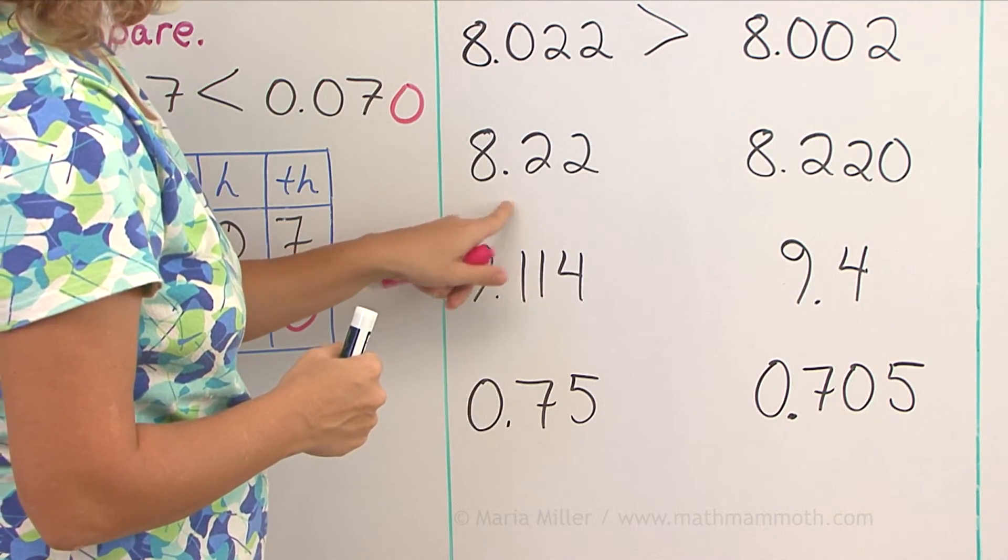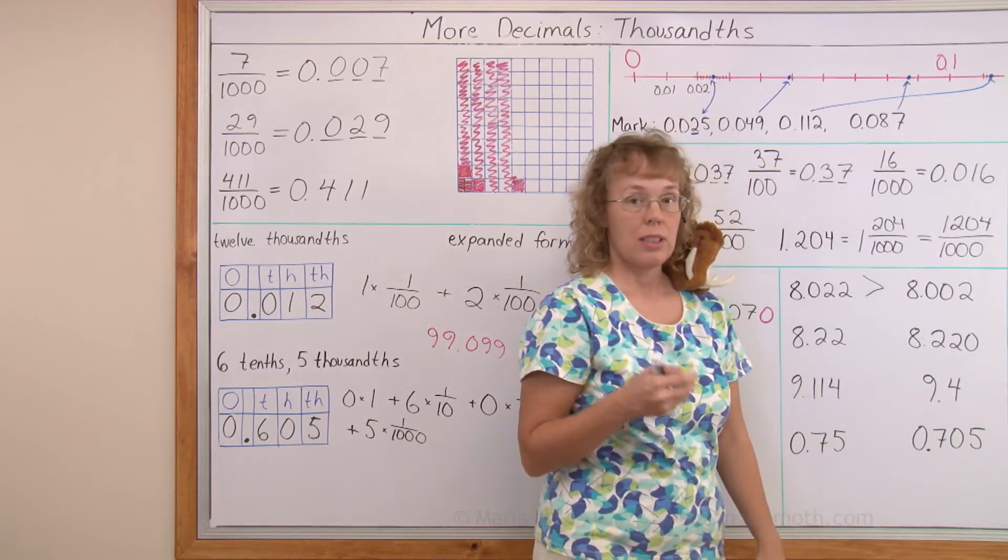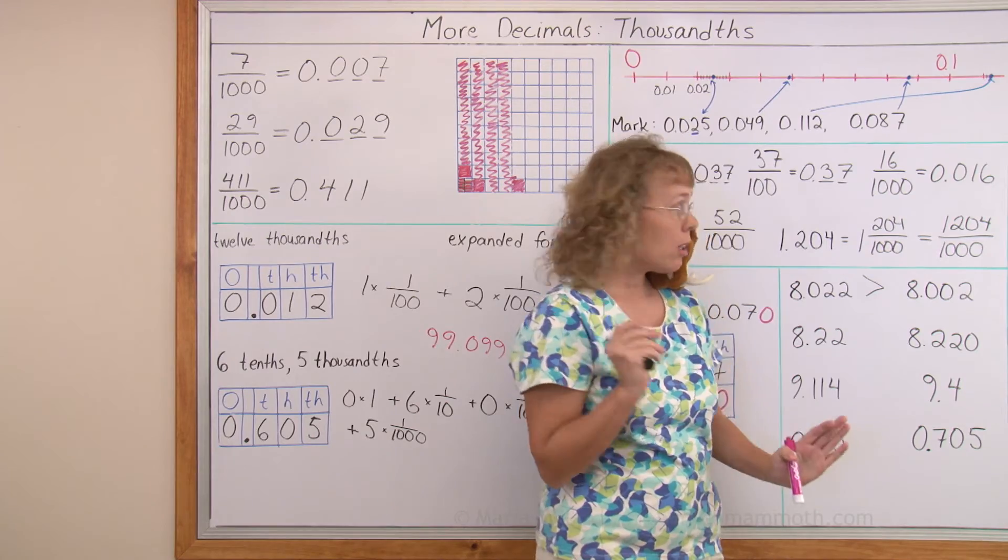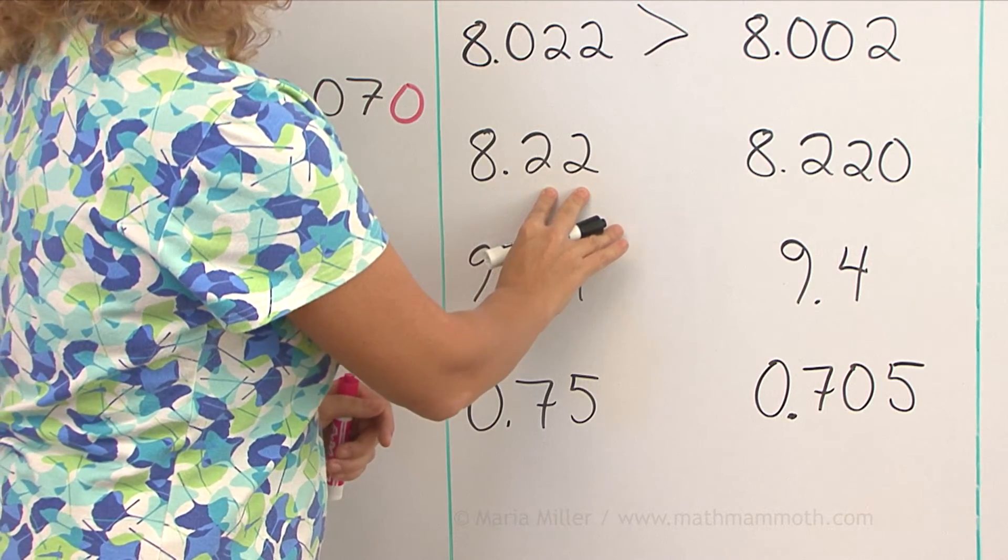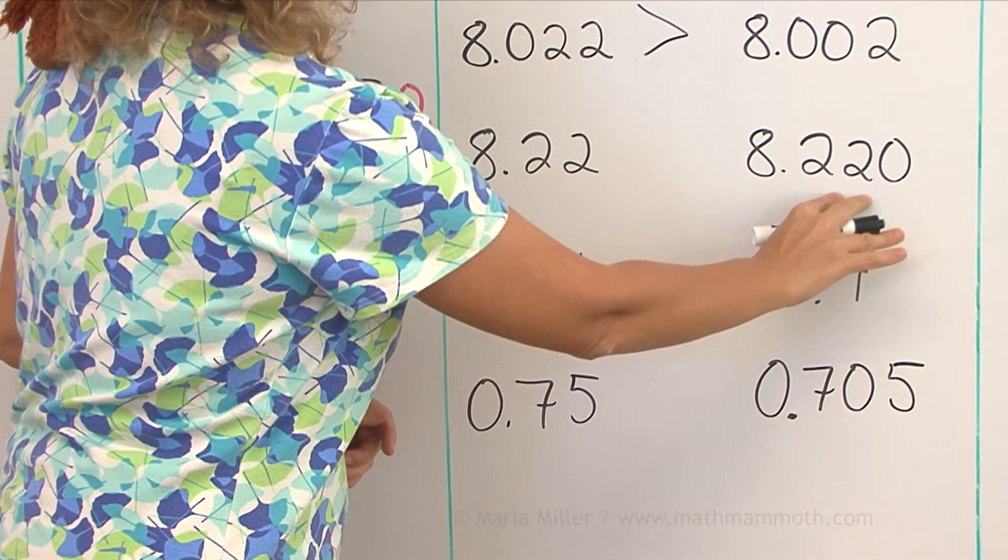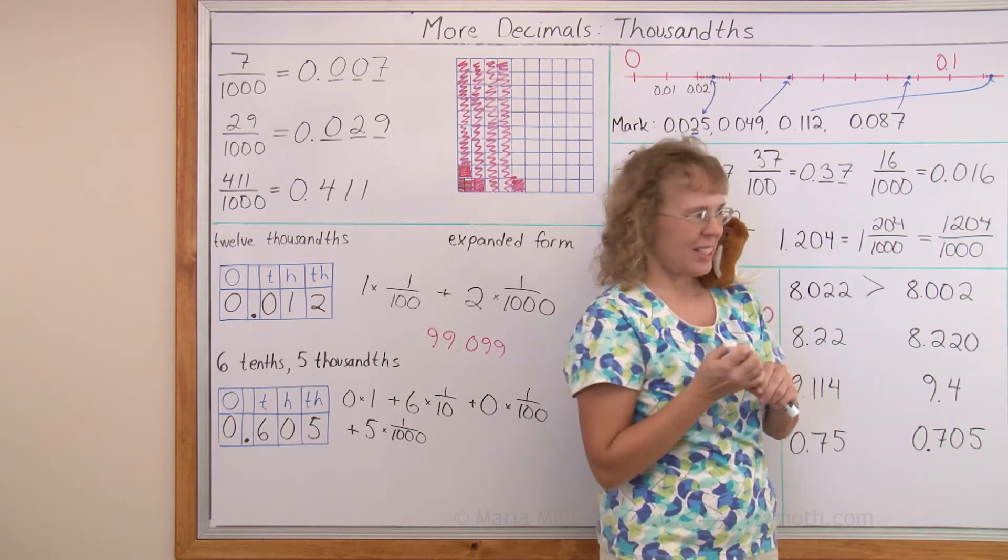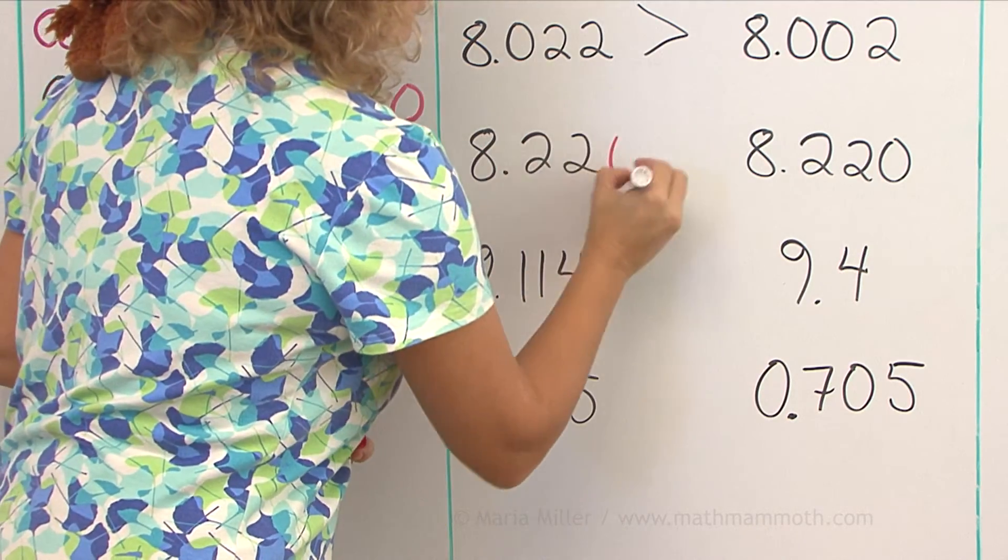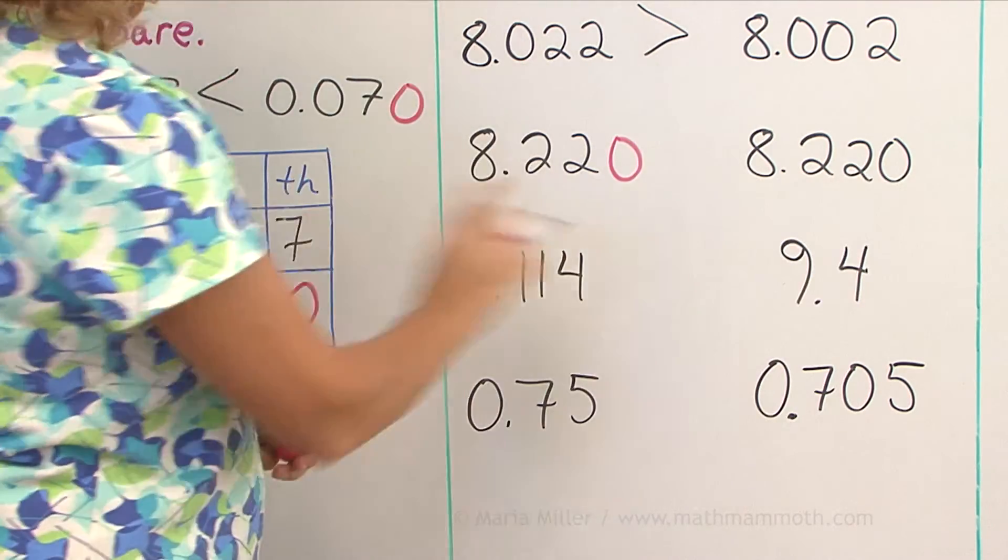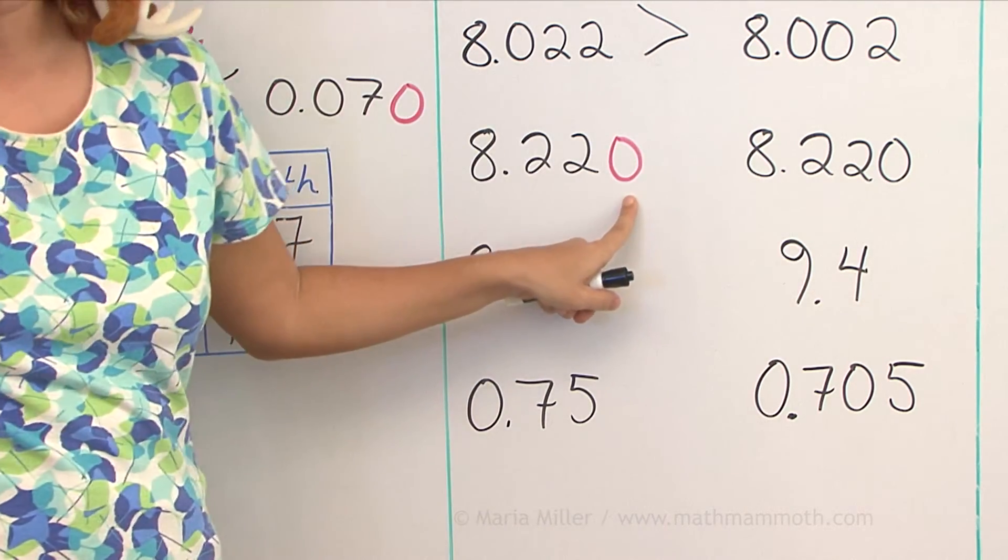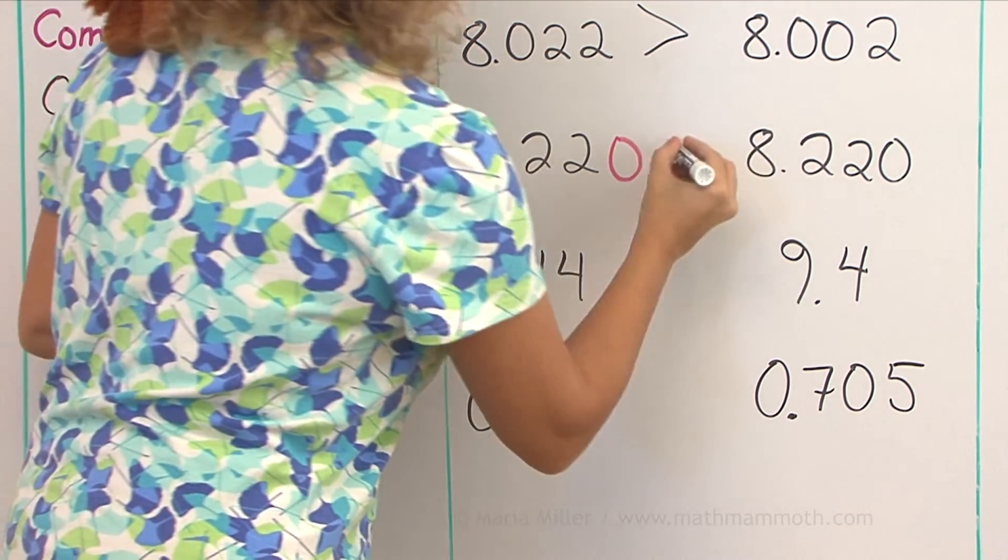Then over here, eight point two two, eight point two two zero. Can you tell now which one is more? Again, some students think that this must be more, because there's two hundred twenty versus twenty-two. But I'm gonna use my trick, and put zero here, so that we have three decimals here and three decimals here, right? This does not change the value of the number, okay? And now you can see they are equal. They are equal in value.